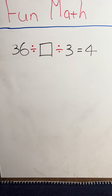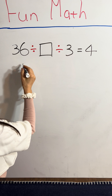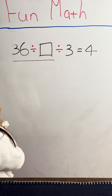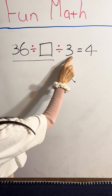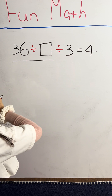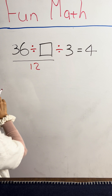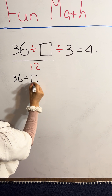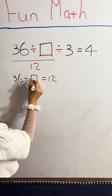I'm going to show this in two ways. One way is I look at this one, treating this one as one thing first. I'm thinking what number divided by 3 is 4? That's 12. So that means 36 divided by this number equals 12. That's 3.